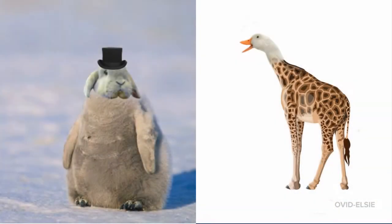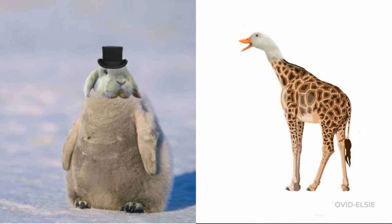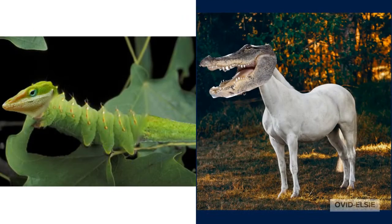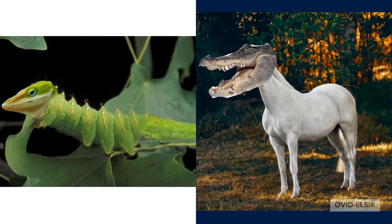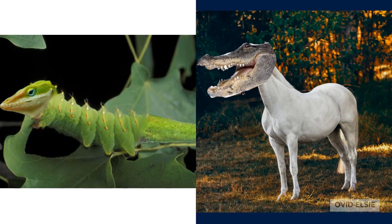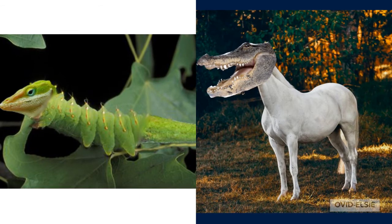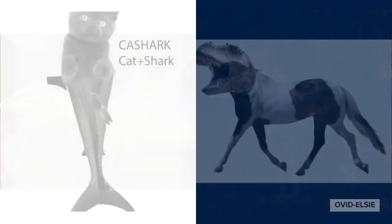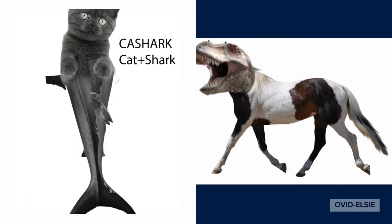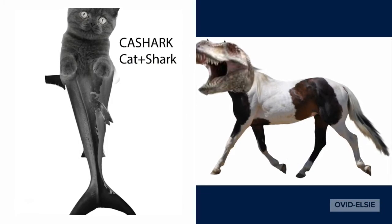In digital media, students are learning how to use Photoshop. In a fast-paced challenge, students had 30 minutes to create a new species of animal by combining two different animals into one. This was a great way to test their creativity and their use of some new blending skills they just learned.